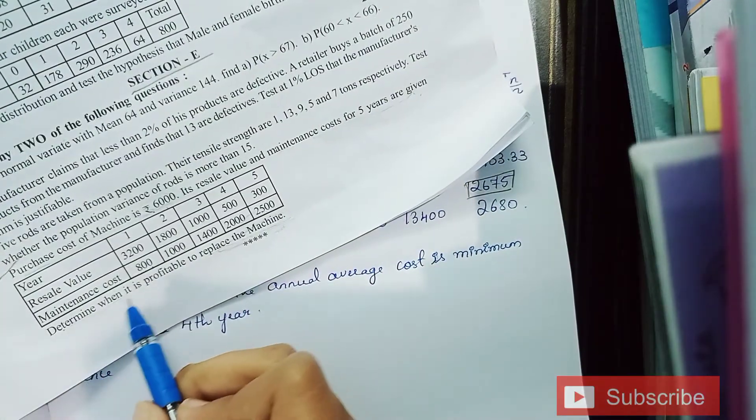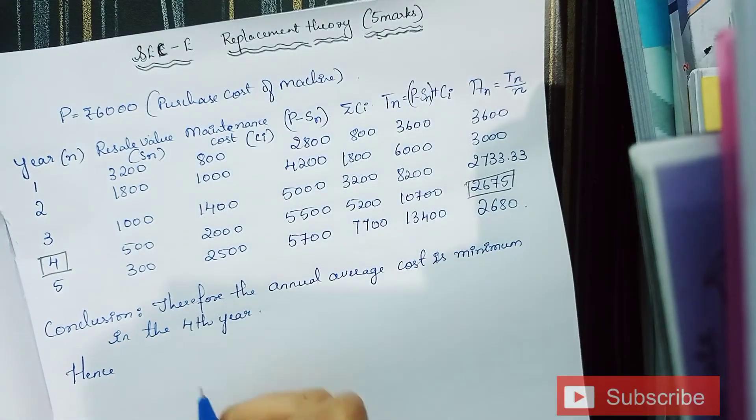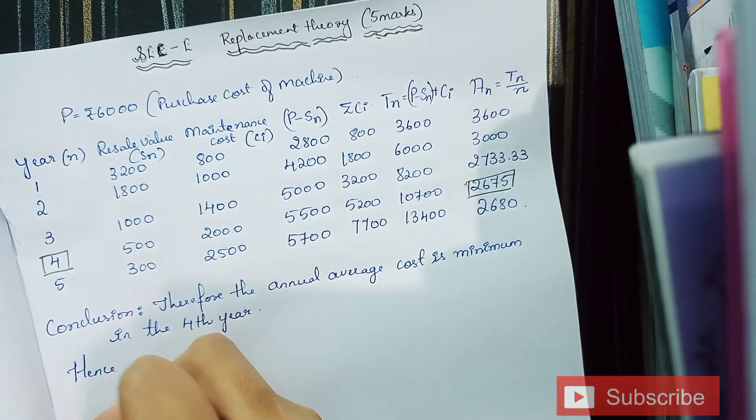The conclusion is therefore the annual average cost is minimum in the fourth year. Actually here we are going to include one more sentence because as the question says, we were supposed to determine when is it profitable to replace the machine. So it's very important to include this sentence.